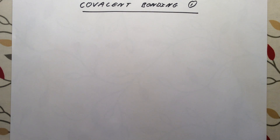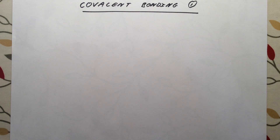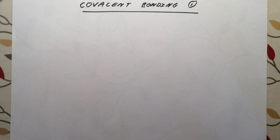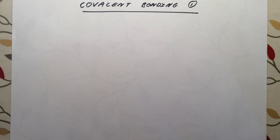This next series of videos is going to cover topic 3 in the Edexcel Additional Chemistry course. The topic is called Covalent Bonding and Separation Techniques. This first video is going to cover what covalent bonding is, look at a couple of examples of simple covalent molecules, and specifically focus on dot and cross diagrams.